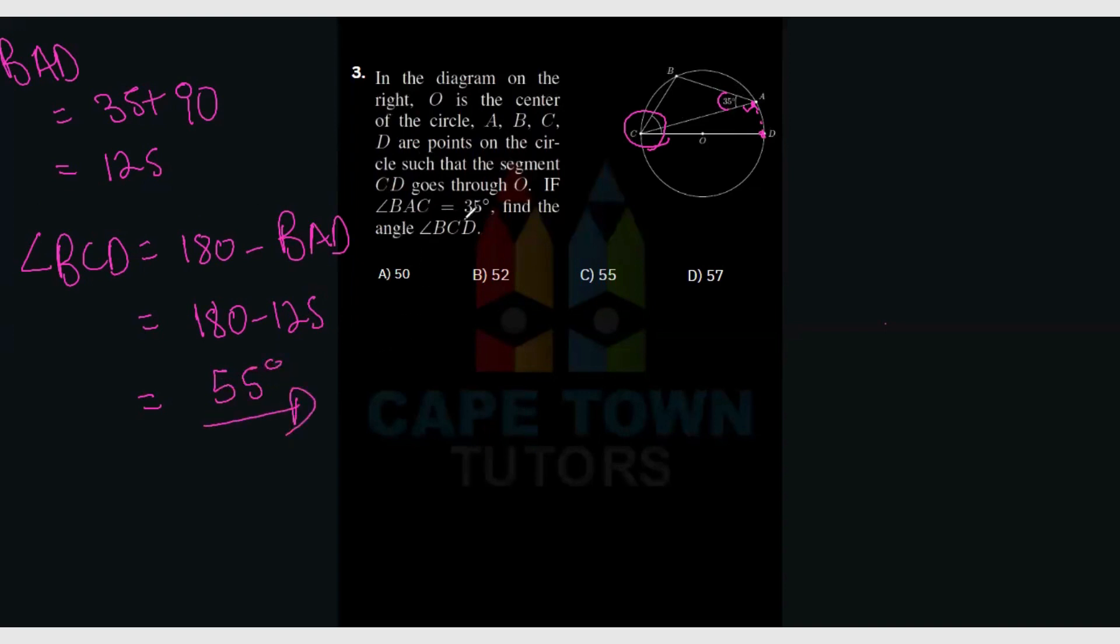And since we already have BAD, we'll say 180 minus 125. So 180 minus 125 is going to be 55 degrees, and that is going to be our answer for BCD, which is equal to C. So fairly straightforward, not too bad, one of the easy ones. Let's continue then into the next question.